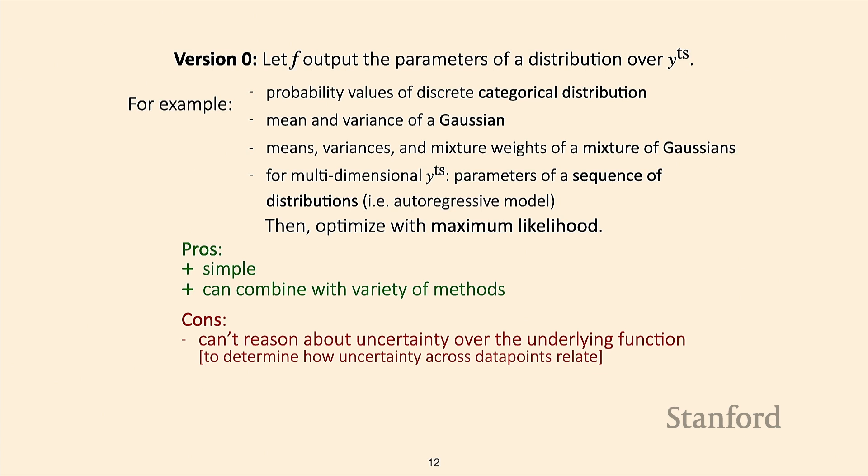The downside is that this allows you to reason about uncertainty over the label, but it won't allow you to reason about the uncertainty of the underlying function. Reasoning about uncertainty of the function is important if you want to understand how to reduce uncertainty across a set of data points — it could be that you're very uncertain about one data point, and having a label for that point would help reduce your uncertainty for a whole host of other data points as well.